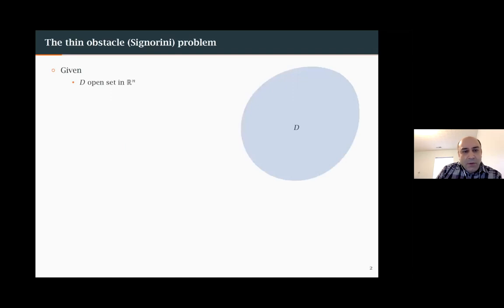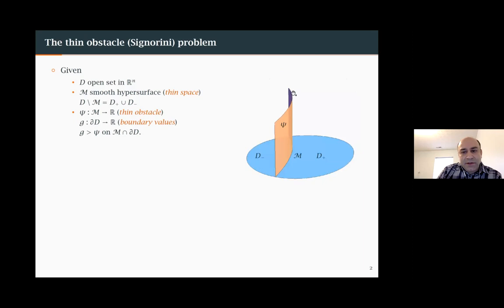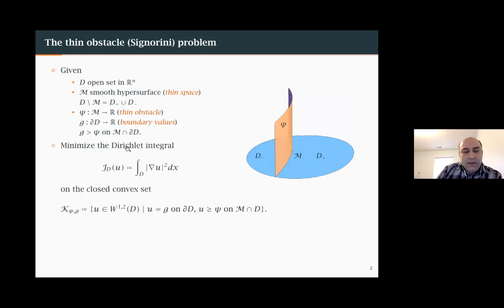The Thin Obstacle Problem, also known as the Signorini Problem: suppose we are given an open set D in R^N and a smooth hypersurface M, also called the thin space, which cuts through D dividing it into two parts D minus and D plus. We are given a function C on this thin manifold, called the thin obstacle, and a function G on the boundary of the domain as boundary values.